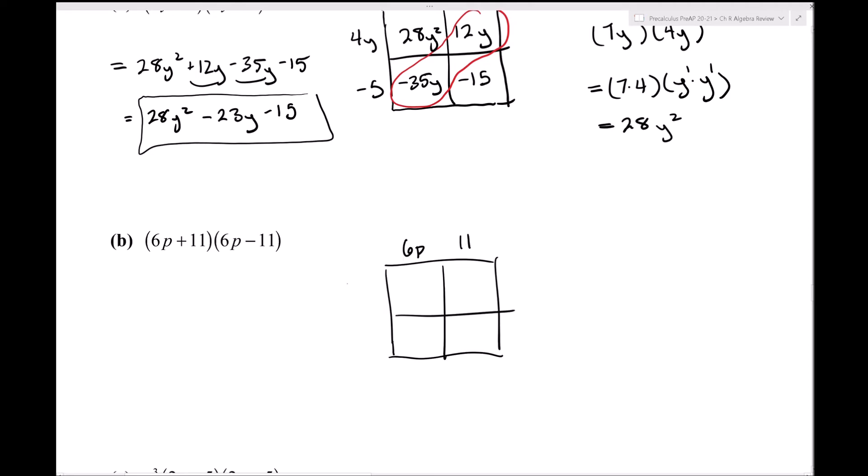So again, I'll do a box. 6p positive 11, 6p negative 11. Doesn't matter where you put the negative one. So then 6p times 6p. That one's going to be 36p². Make sure you check that one. 6p times 11, 66p. 6p times negative 11, negative 66p. Negative 11 times 11, negative 121.